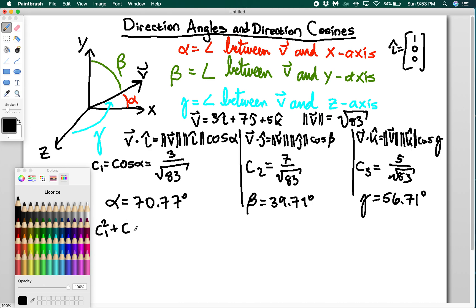We can check that it really is a unit vector too. If I do c1 squared plus c2 squared plus c3 squared, it does in fact equal 1. 9 plus 49 plus 25 is equal to 83. So I have 83 over root 83 squared, which is 83 over 83. I get 1.